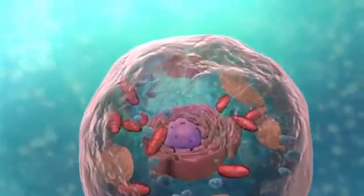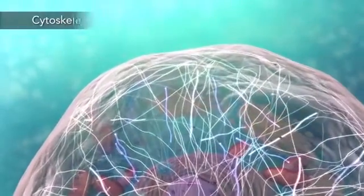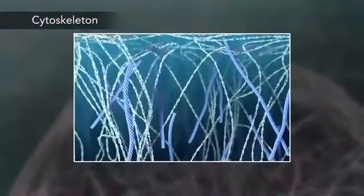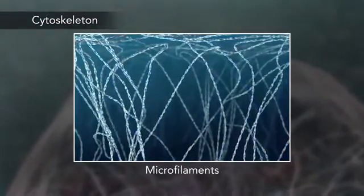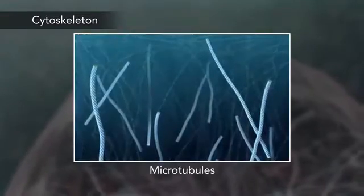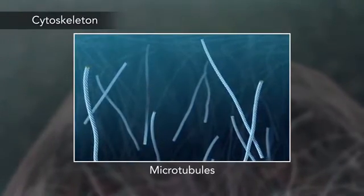Meanwhile, the cell maintains its shape through a cytoskeleton. The cytoskeleton includes the thread-like microfilaments, which are made of protein, and microtubules, which are thin, hollow tubes.